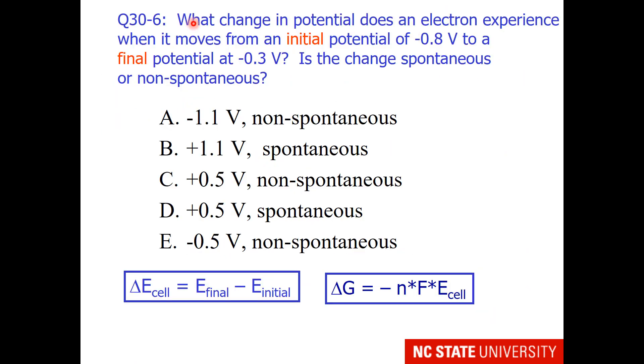Here is a question for you. What change in potential does an electron experience when it moves from an initial potential of minus 0.8 volts to a final potential of minus 0.3 volts? Is the change spontaneous or non-spontaneous? Let me remind you that any change in chemistry is always final minus initial. So if my initial is minus 0.8, that would be a minus minus 0.8 volts here. And my final is minus 0.3. So hopefully you can take negative 0.3 minus a minus 0.8 and come up with a value. And I remind you that whenever E cell has one particular sign, delta G has the opposite sign.